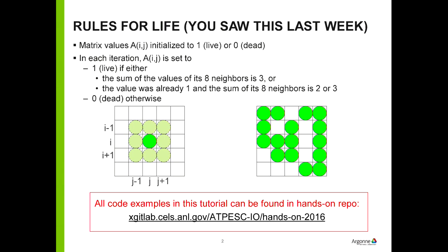Just in case you forgot — I'm sure you didn't, it was just last week — in Game of Life you start off with an array, and if a cell is lonely it dies, if it's crowded it dies. But if it has the right number of friends and support, it can create more of them. These things grow and shrink and you can create all kinds of fun patterns.